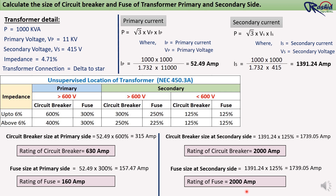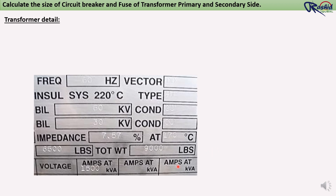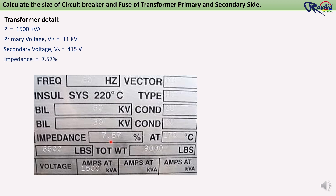Let's see another example: if impedance is more than 6%, how do we do the calculation? From the nameplate, transformer rating is 1500 kVA, primary voltage is 11,000 volts, secondary voltage is 415 volts, and impedance is 7.57%. So first we need to find out the primary and secondary currents.